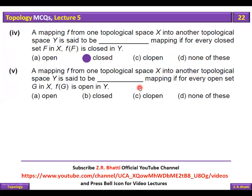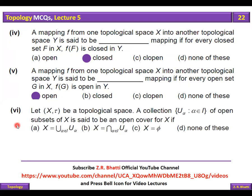A mapping f from one topological space X into another topological space Y is said to be open if for every open set G in X, f of G is open in Y. Yani agar aap X ka open set lein to uska image Y mein bhi open hoga — yahi open mapping kehlata hai.